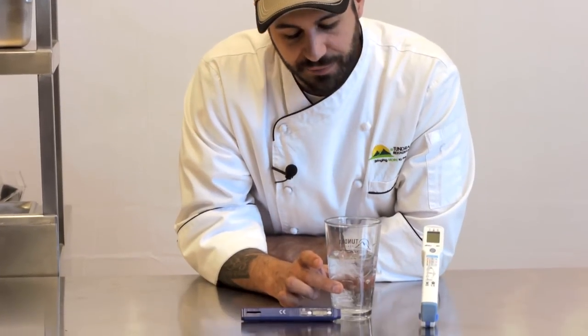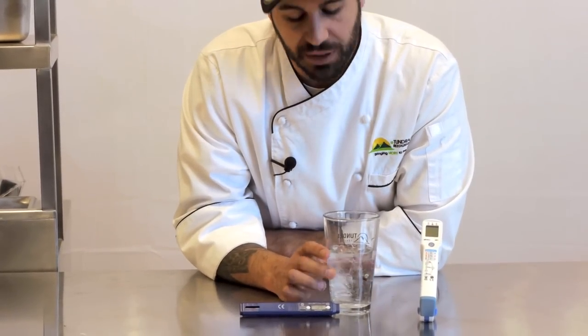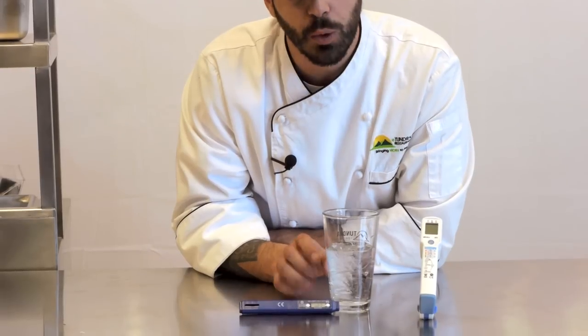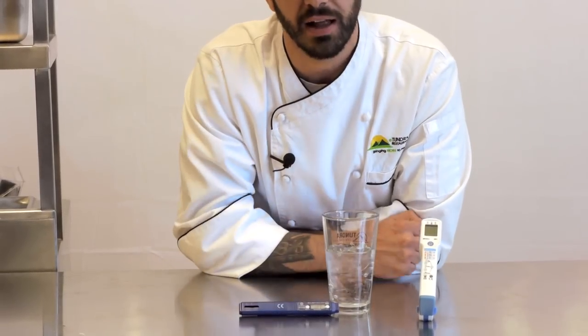You're going to calibrate your digital thermometer in an ice bath solution just like the analog dial thermometer. Here we've got a nice glass filled halfway with ice and we're going to fill it in with water just to fill in the cracks and seams of the ice. We don't want the ice floating. We want it to be nice and compact in the glass.